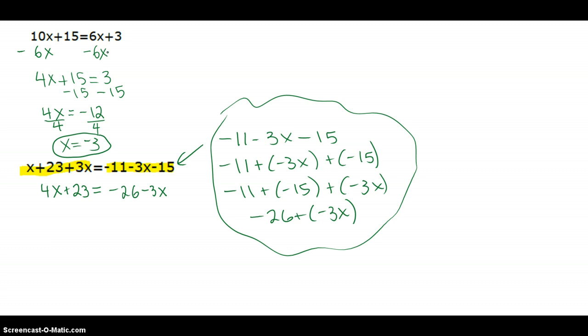Now it just looks like the first problem. So I'm going to get all the x's on the same side by adding the same quantity to both sides. So I'm going to add 3x to both sides. So we get 7x.